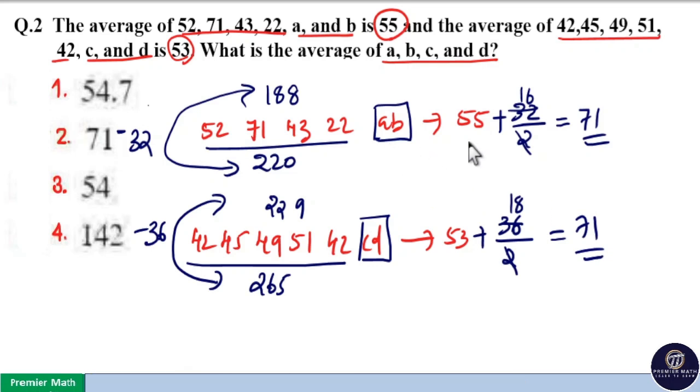Which means the average of a and b is 71, and the average of c and d is 71. That is, the average of a, b, c, and d is equal to 71. Option 2 is your answer.